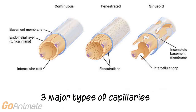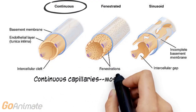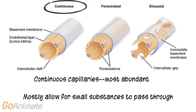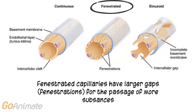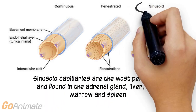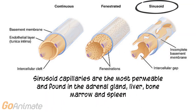There are three major types of capillaries. Continuous capillaries are the most abundant and allow for some substance exchange as they are permeable to small substances. Fenestrated capillaries contain spaces called fenestrations and are more permeable than continuous capillaries, allowing more substances through. Sinusoid capillaries are the most permeable and are found in the adrenal gland, liver, bone marrow, and spleen.